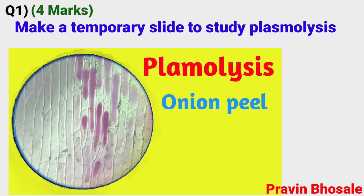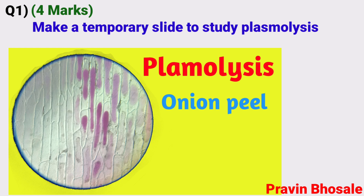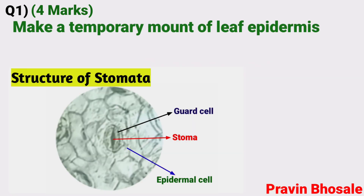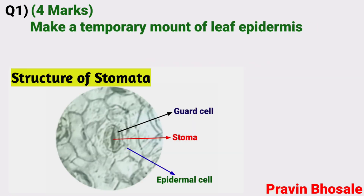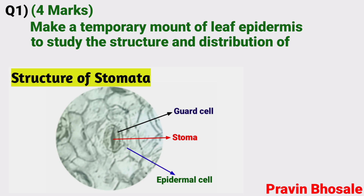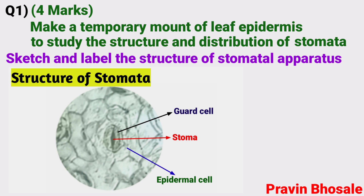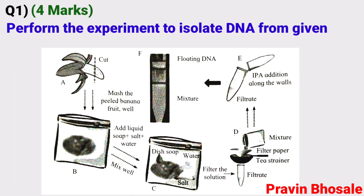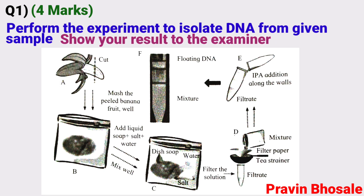Second is: make a temporary slide to study plasmolysis. Sketch and label the diagram. Or make a temporary mount of leaf epidermis to study the structure and distribution of stomata. Sketch and label the structure of stomatal apparatus. Or find out the adulteration of the given milk sample for water and starch. Or perform the experiment to isolate DNA from the given sample. Show your result to the examiner.